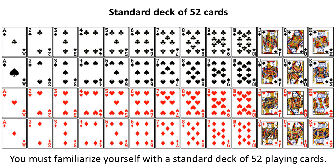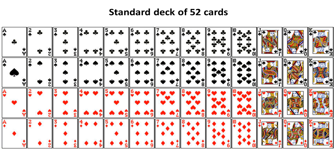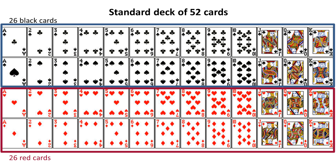The first thing about a standard deck of cards is that there are 52 of them, and this is what they look like. They're divided up into subgroups. For example, there are 26 black cards and there are 26 red cards. The 26 black cards are on top and the 26 red cards are on bottom.